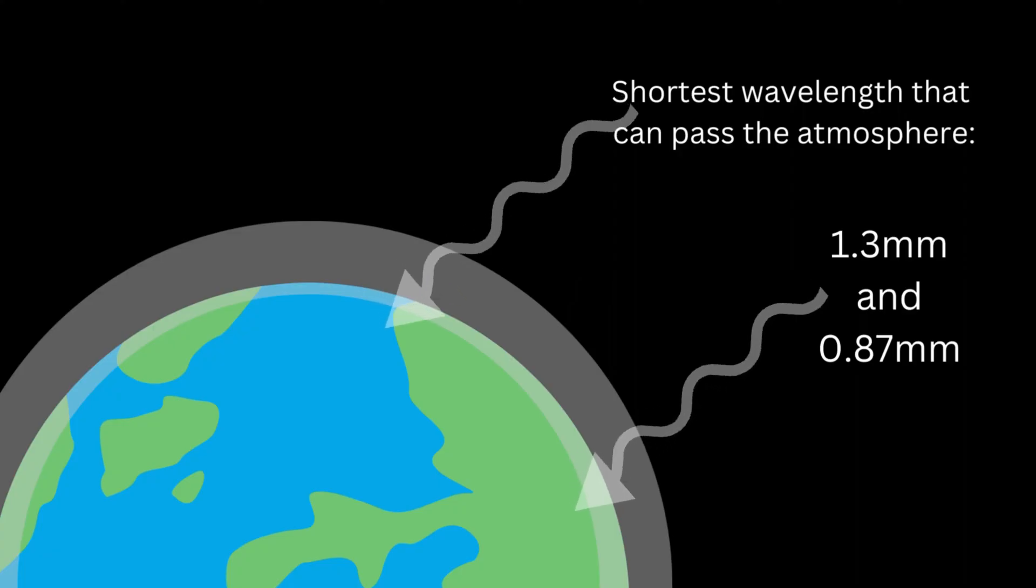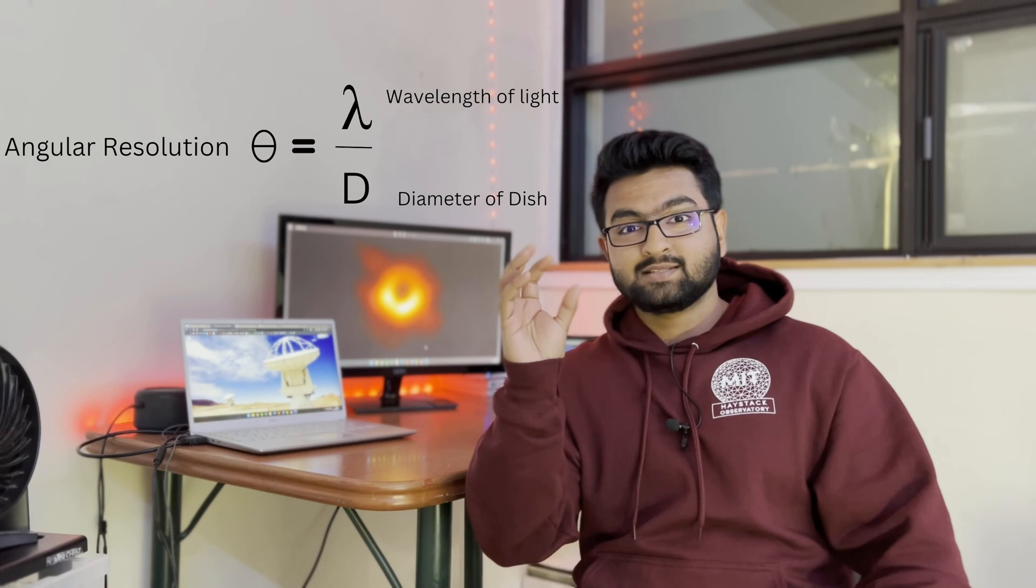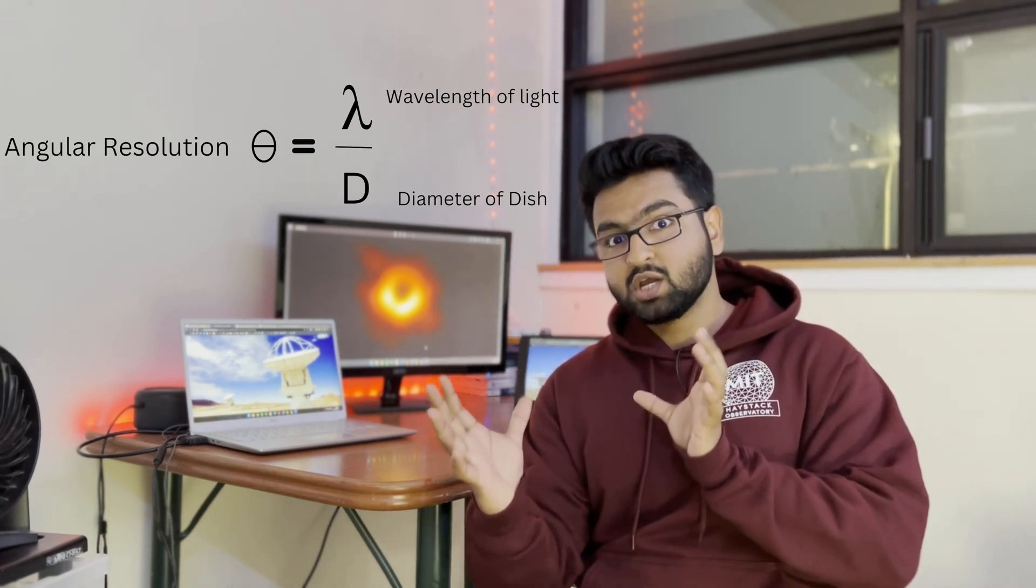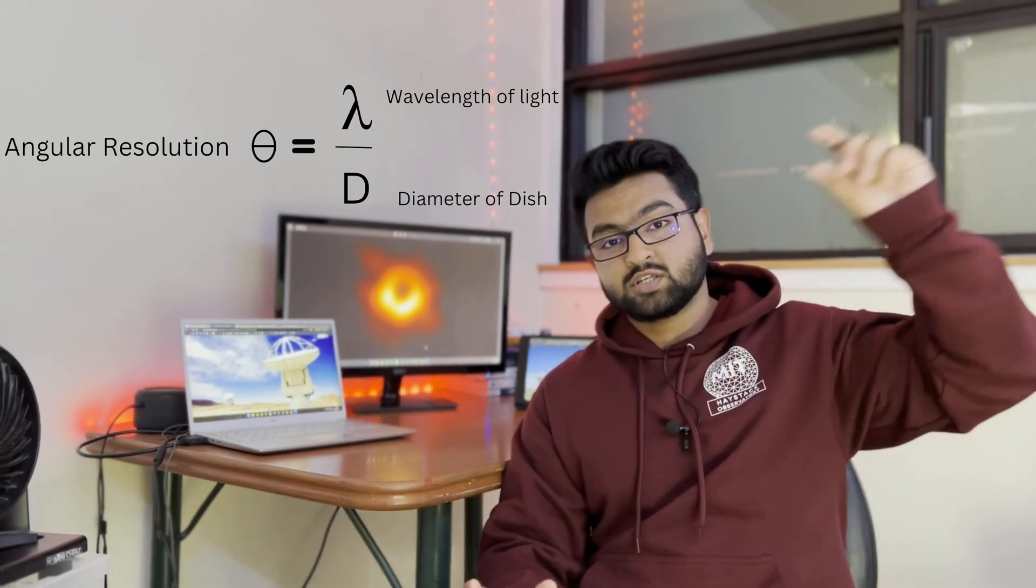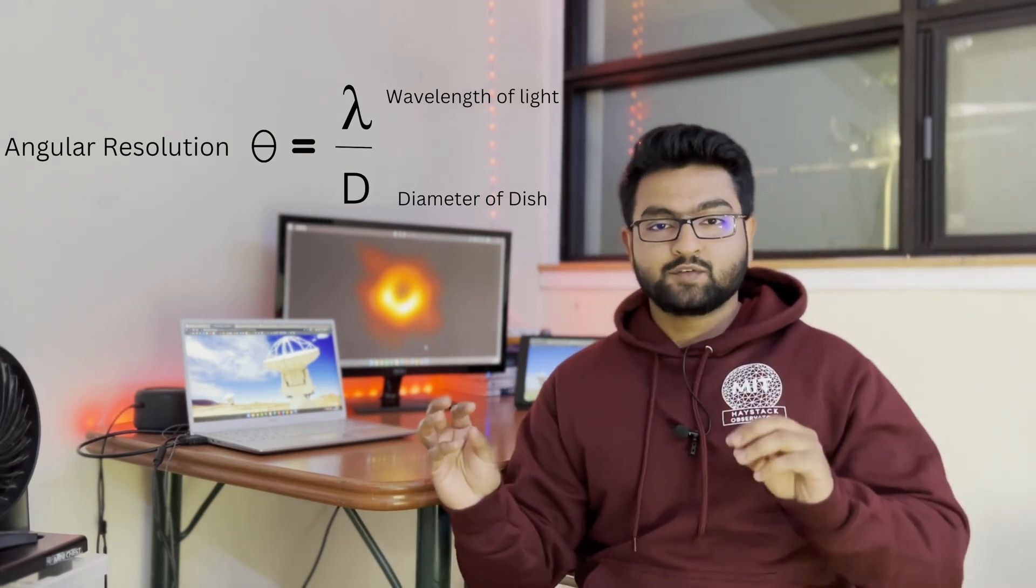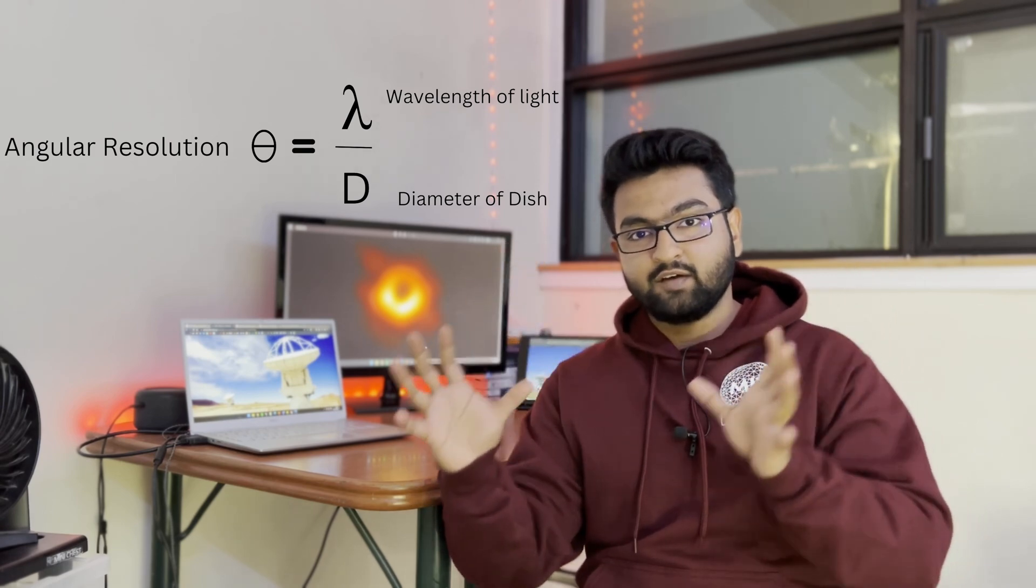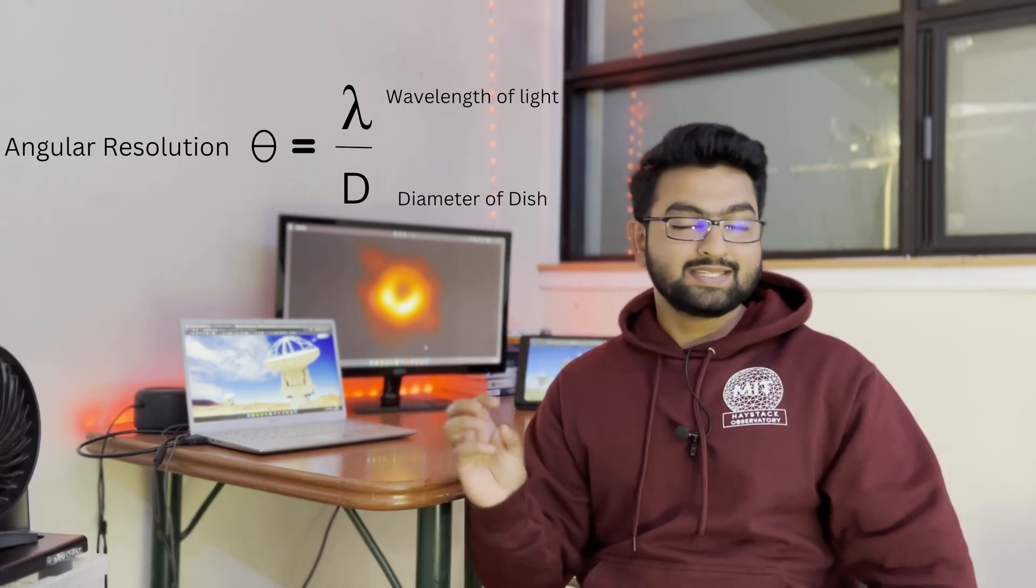To make things more complicated, these things are really far away, so you would need a very large dish. Here we have one particular problem: the Earth's atmosphere acts as a filter. The shortest wavelength that can actually pass through the Earth's atmosphere is 0.87 millimeters and 1.3 millimeters. If you look at the formula of angular resolution in more mathematical terms, you see that it's the wavelength of the light coming in on your radio dish divided by the diameter of the dish. You see how the analogy of a bigger diameter corresponding to a smaller angular resolution comes into picture.